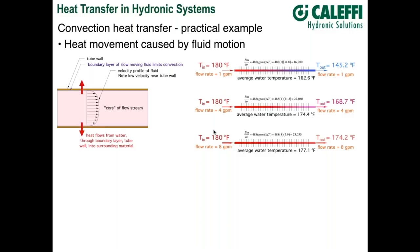Let's bump it up to 8 GPM on the same fin tube. The outlet temperature does increase, not quite as much as before. Our average temperature went up roughly about three degrees Fahrenheit. Output went from 22,000 to about 23,000 BTUs per hour. We continue to increase heat transfer as we increase flow rate, but we're seeing a diminishing rate of increase — yes, it's going up, but by smaller and smaller amounts.